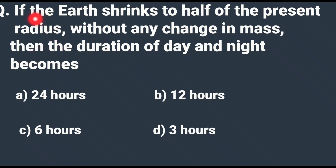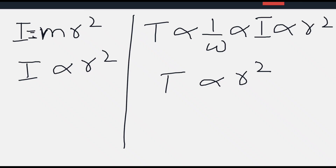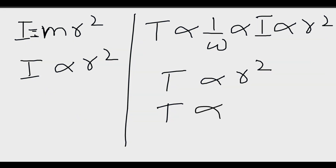If the Earth shrinks to half of the present radius without any change in mass, and the radius shrinks to its half, then by putting the value of r as 1/2, the square of r is (1/2)² = 1/4. So the time period is directly proportional to 1/4.